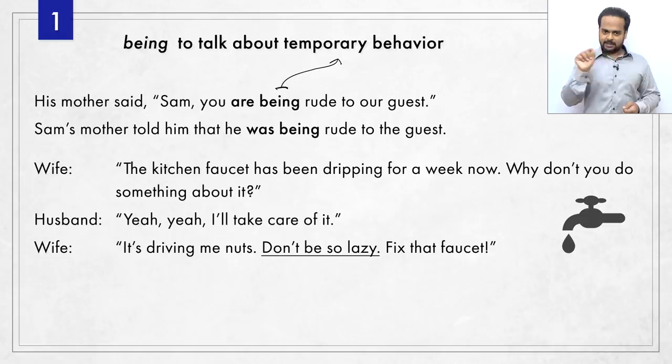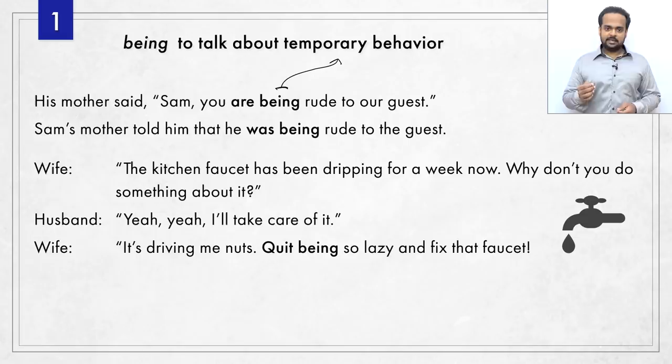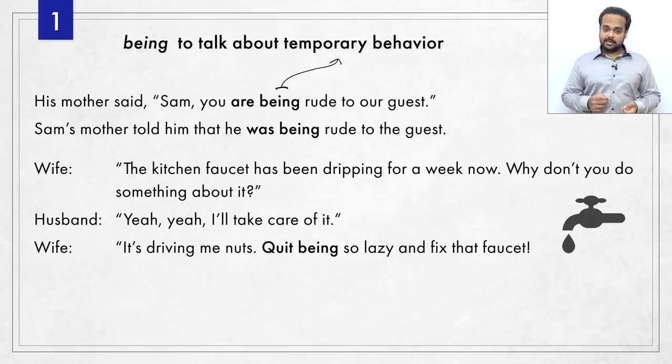Now, that underlined sentence can be improved using being. She can say: quit being so lazy and fix that faucet. That's a very common thing to say. Stop being so lazy would also be correct. At this point the husband might ask, are you saying I'm a lazy guy? To which the wife would reply: no, I'm just saying right now you're being lazy. So could you please stop being lazy and fix the faucet?